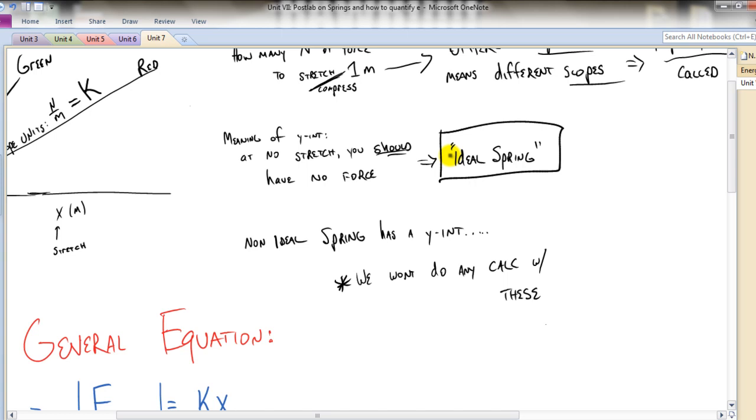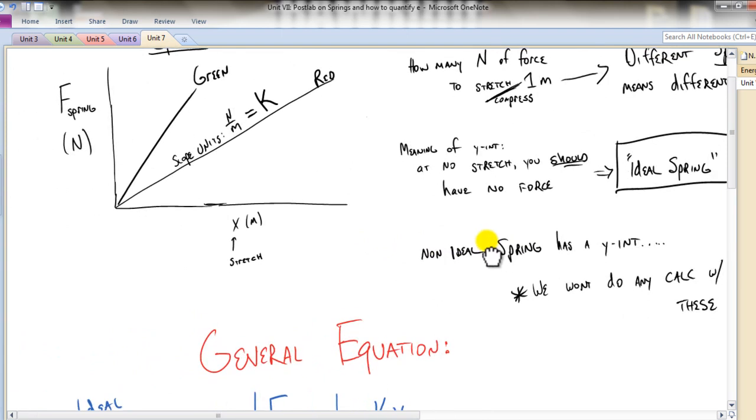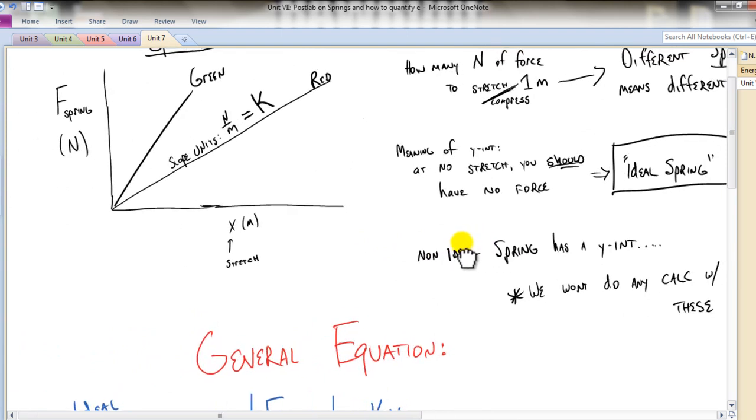They do have a y-intercept. They are more like a real-life spring. But for our cases, we are going to deal with ideal springs. And you will see that in other physics textbooks as well, basically a no y-intercept graph, being that if you exert a force, it's going to stretch.